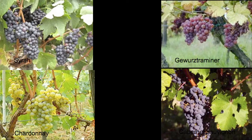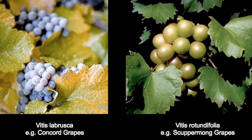All of these grapes are in the species Vitis vinifera, and that's like the arabica of the grape world. Now in the New World there are five or six species of native grapes. You're probably most familiar with concord grapes — that's Vitis labrusca — or maybe you've heard of scuppernong grapes, which grow in the southeastern United States, called Vitis rotundifolia.